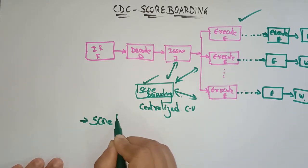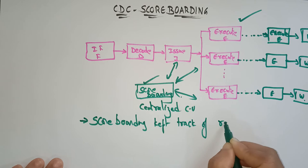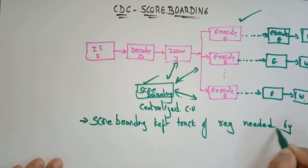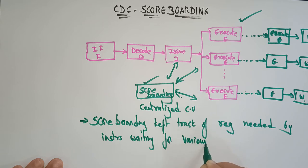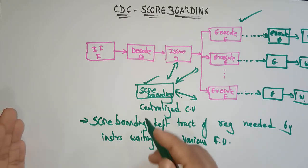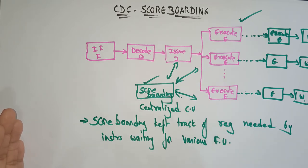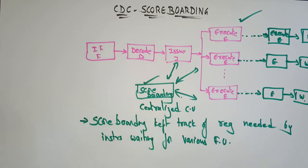The scoreboard keeps track of registers needed by instructions waiting for various functional units. When all registers have valid data, the scoreboard enables instruction execution. Whenever a functional unit finishes, it signals the scoreboard to release the resources. So the scoreboard is a centralized control logic which keeps track of the status of registers and multiple functional units.